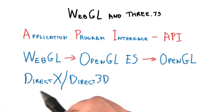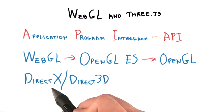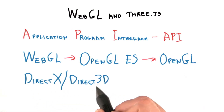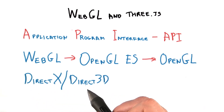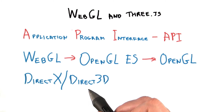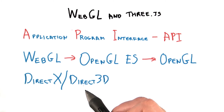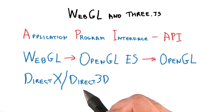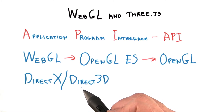The other major competing API is called DirectX or Direct3D, which is commonly used for games on the Xbox console and Windows PCs. This is almost the last time I'll mention DirectX. It's not all that different from WebGL. In fact, Google Chrome on the PC turns WebGL commands into DirectX calls.